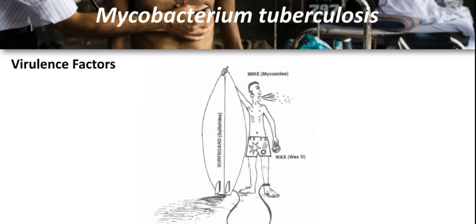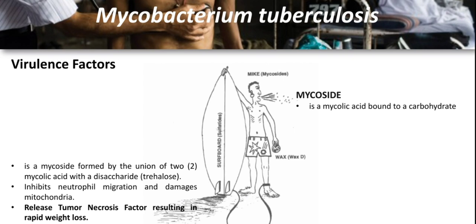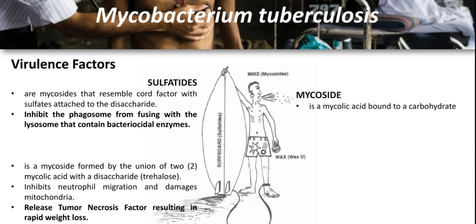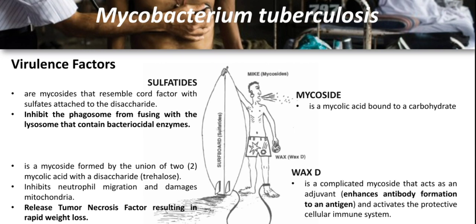The virulence factors of Mycobacterium tuberculosis include: the mycoside, which is a mycolic acid bound to a carbohydrate; the cord factor, which releases tumor necrosis factor resulting in rapid weight loss of the patient — which is why persons infected with TB appear thin; the sulfatides, which inhibit the phagosome from fusing with the lysosome that contains bactericidal enzymes; and WaxD, which acts as an adjuvant, enhancing antibody formation against an antigen and activating the protective cellular immune system.